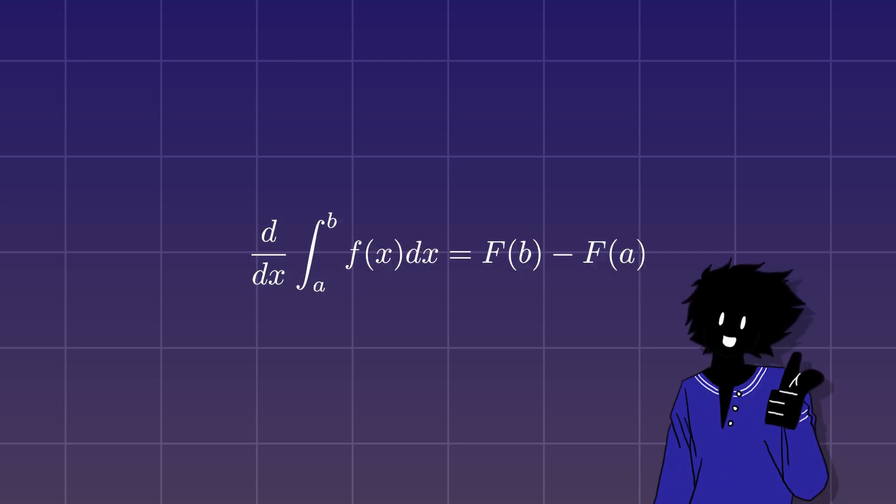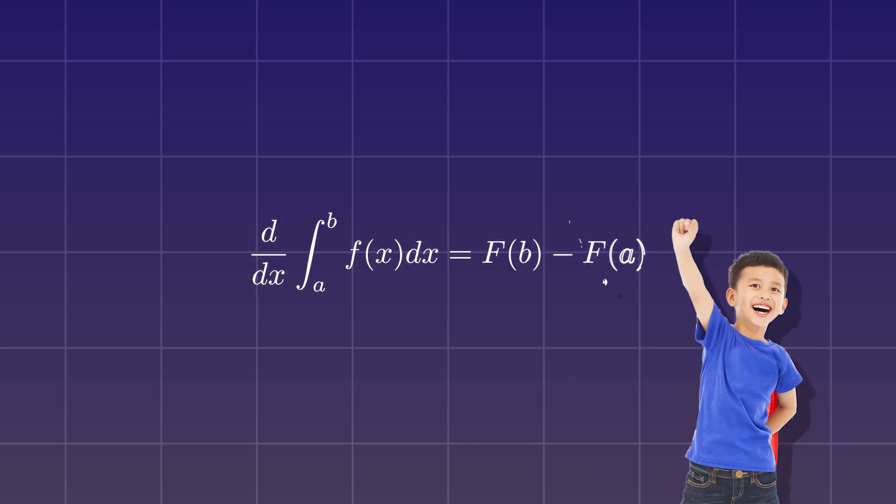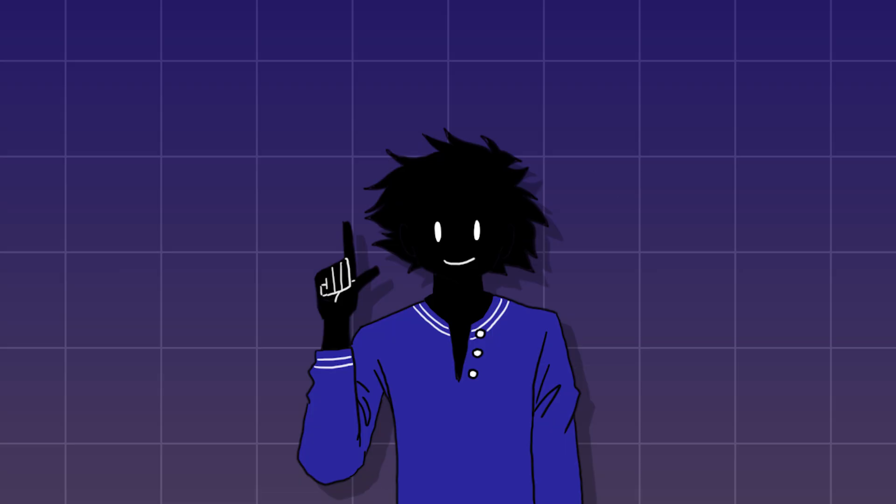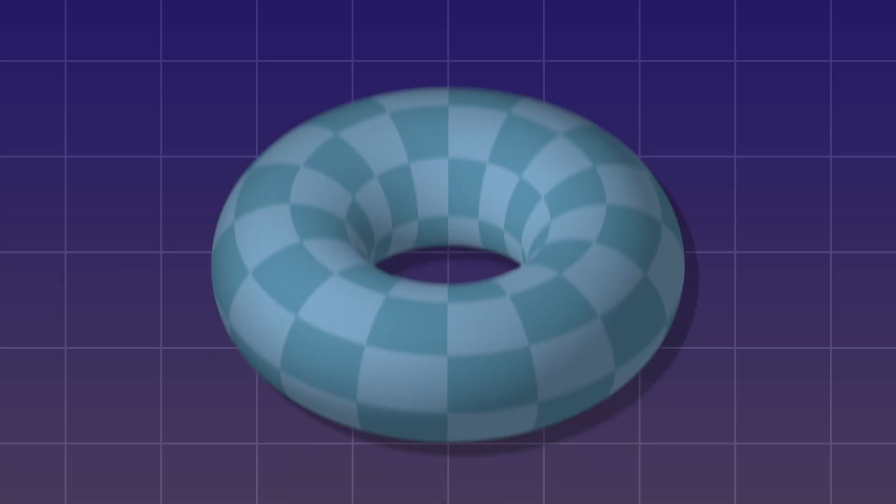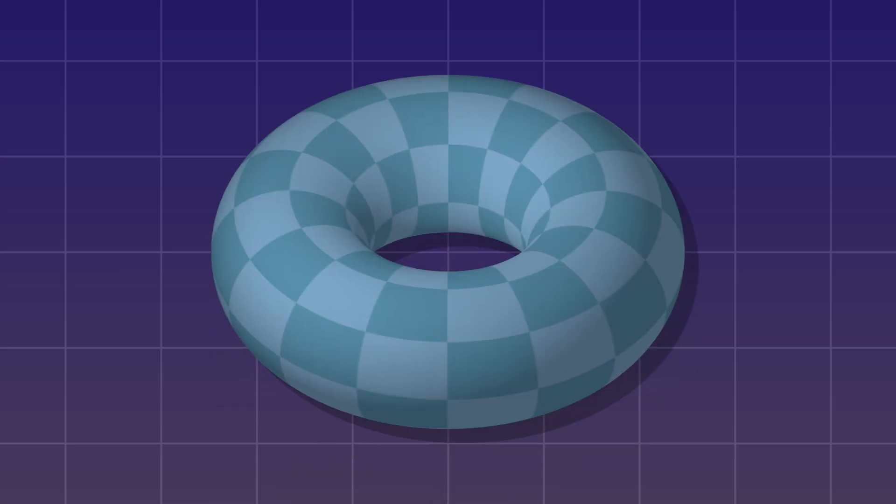A lot of people think calculus is hard, but it's actually so easy that a fifth grader can understand. Calculus is mainly about two things: how things change in moments of time, and finding the area and volume of very weird objects.